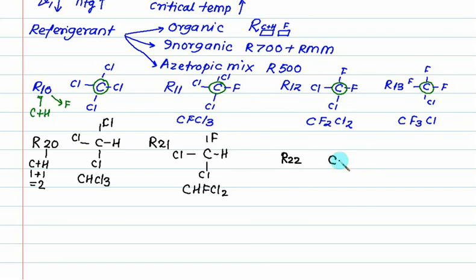R22 - 1 hydrogen, 1 plus 1 equals 2. Remaining are 3 spaces. We want 2 fluorine, so 2 fluorine and 1 chlorine. Formula is CHF2Cl.